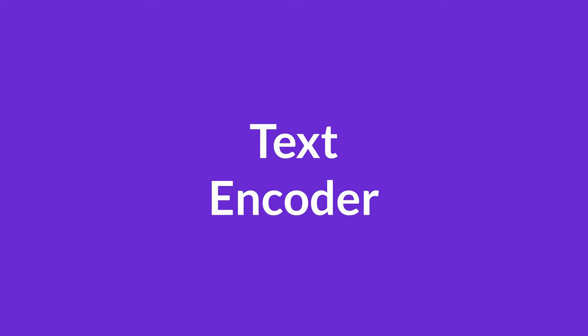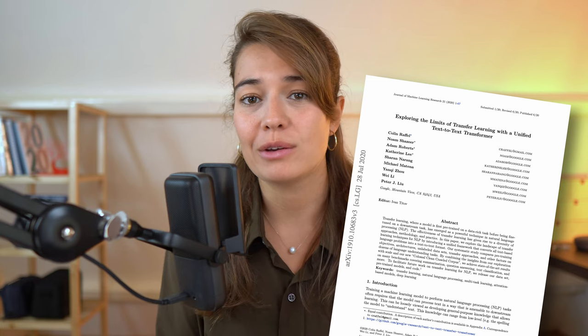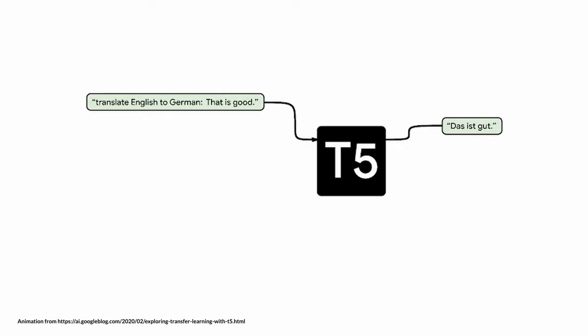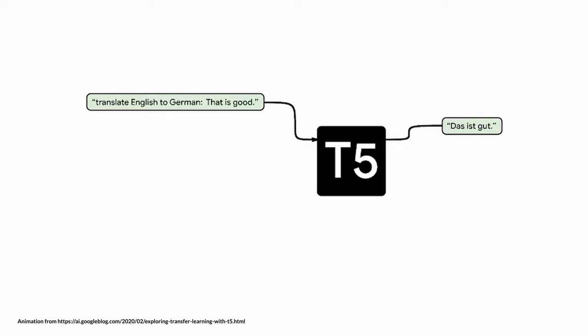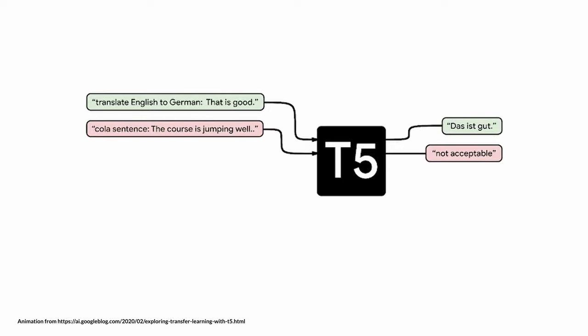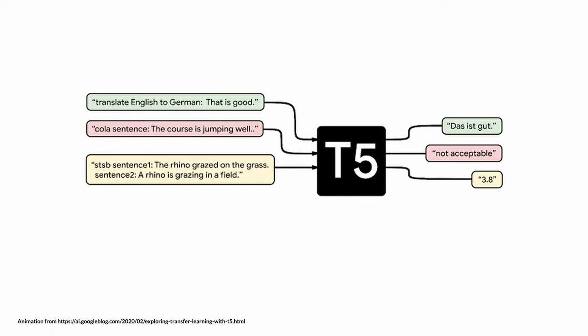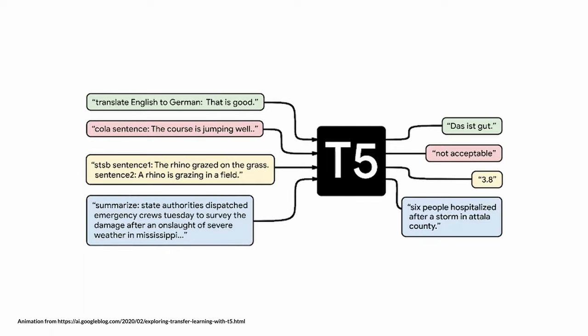Now let's take a closer look at each of these components. The text encoder is a pre-trained transformer called T5. T5 is basically a language model made by Google back in 2019. It is a text-to-text model that is trained to achieve many tasks at once — for example, translation, sentence acceptability determination, sentence similarity estimation, and summarization.